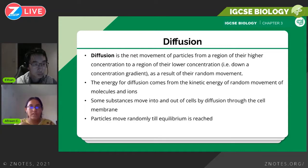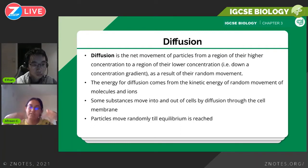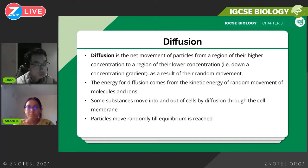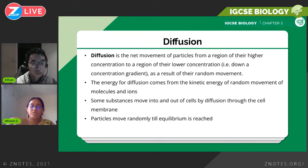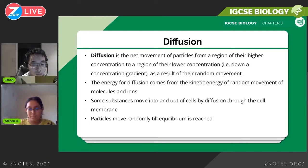The definition is something you need to memorize. It's usually a straightforward question — they ask you to define it, or in the MCQ paper they give you multiple definitions and you have to choose the correct one. Diffusion is the net movement of particles from a region of higher concentration to a region of lower concentration, down the concentration gradient.